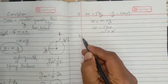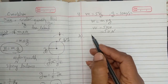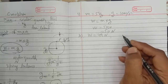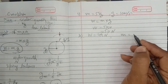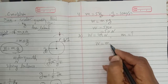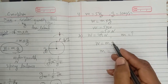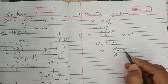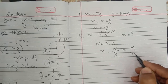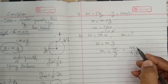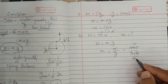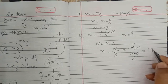Question 2: What is the mass of an object whose weight is 49 Newton? Using m = W/g = 49 / 9.8 = 5 kg. Simple question.